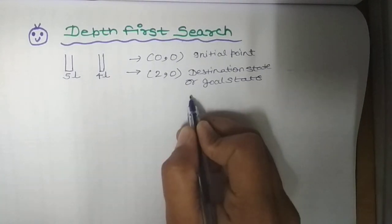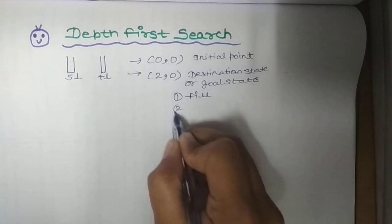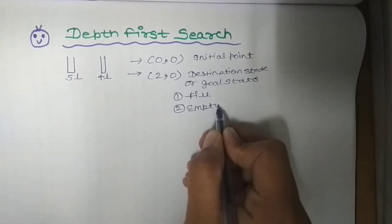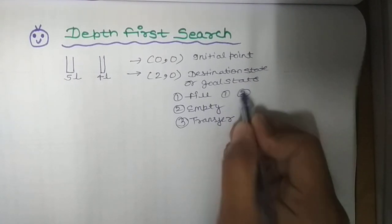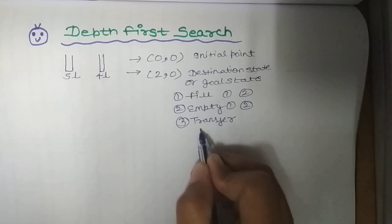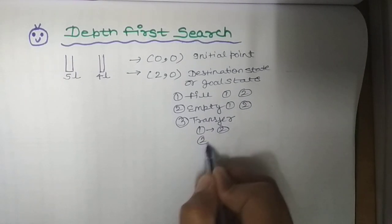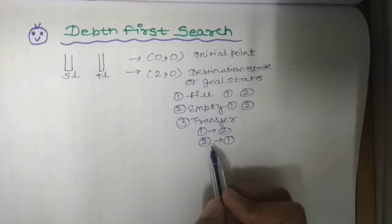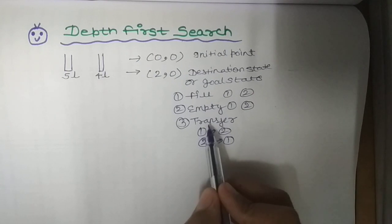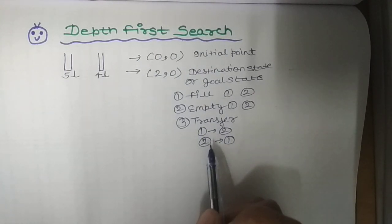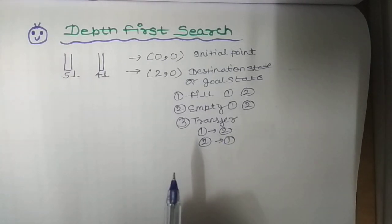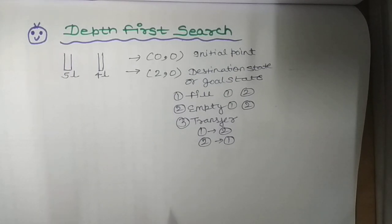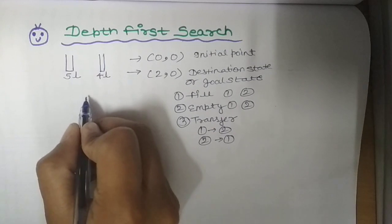In depth first search, the same operations apply: fill operation, empty operation, and transfer operation — fill first water jug, fill second water jug, empty first water jug, empty second water jug, transfer water of first jug to second, and transfer water of second jug. But remember, you don't have to apply each and every step — just think about your goal state and take the possible path toward it.